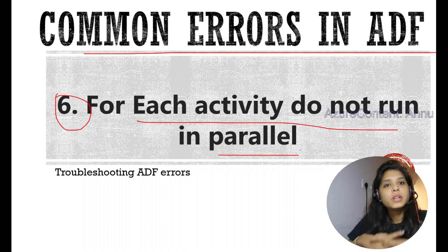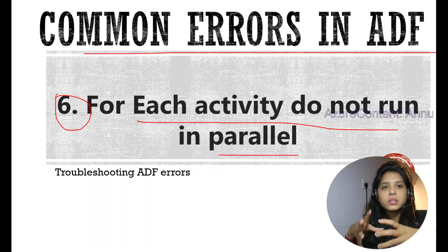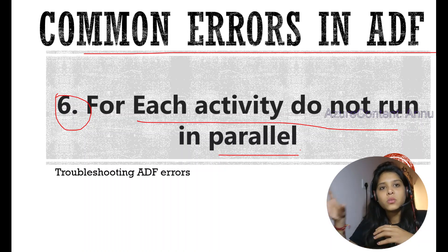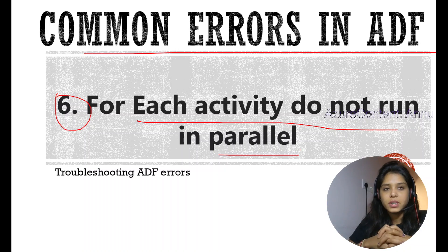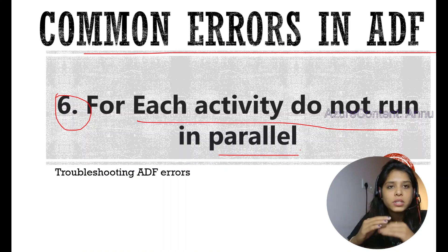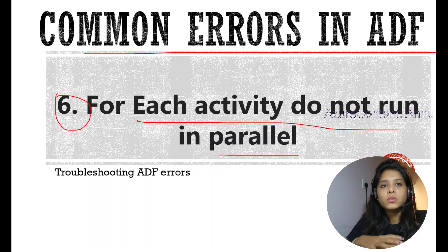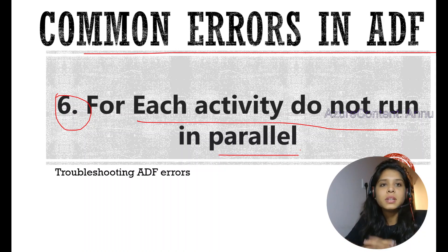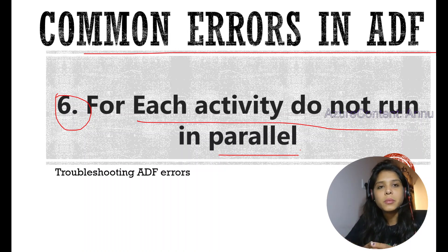Whenever we want to run multiple iterations of any activity — for example, if we want to copy multiple tables from one source to destination — we include that copy activity inside a For Each activity. We can run it in sequential order, where one iteration completes before the next, or run all iterations in parallel. By default, it runs 20 iterations at once, and the maximum is 50 in a For Each activity.